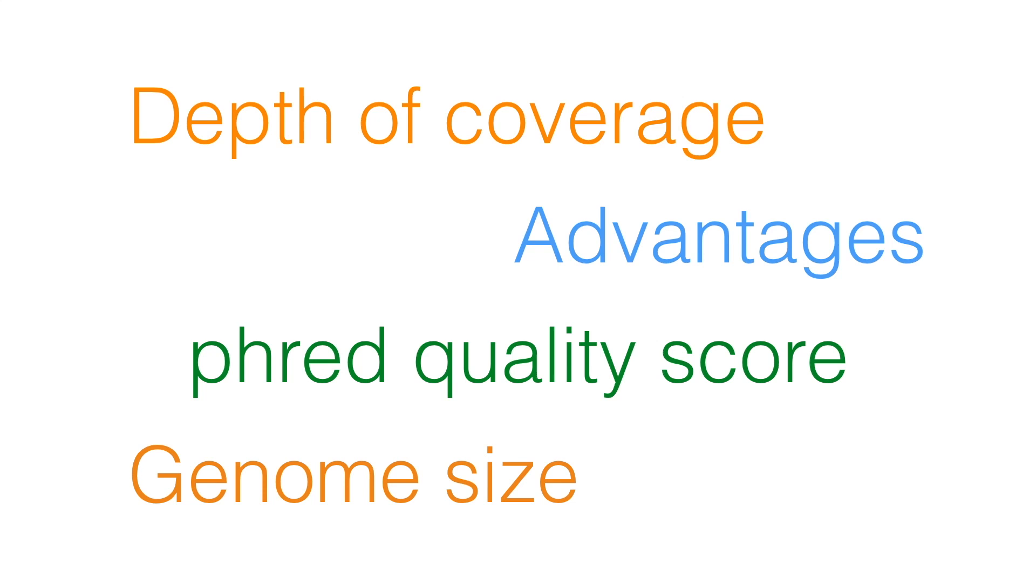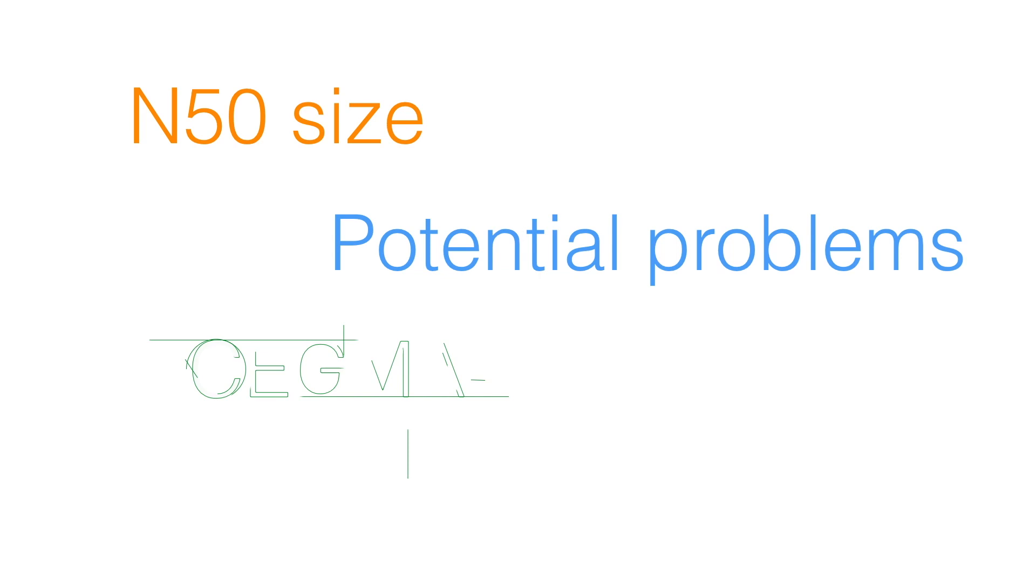Understand how depth of coverage is calculated, recognize the advantages and disadvantages of long and short reads, identify what is recorded in FRED's quality score, calculate the expected genome size from the K-mer using a frequency-based approach, calculate the N50 size, identify potential problems of using N50 metrics, and explain the idea behind using Segma and Busco.